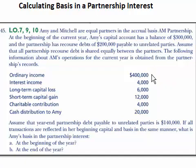Ordinary income was $400,000. Interest income was $4,000. They had a long-term capital loss of $6,000, a short-term capital gain of $12,000, charitable contributions of $4,000, and a cash distribution to Amy of $20,000.